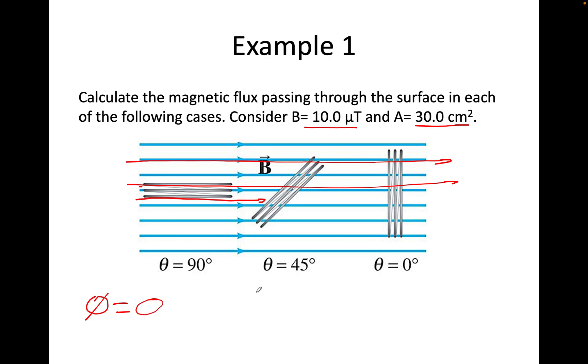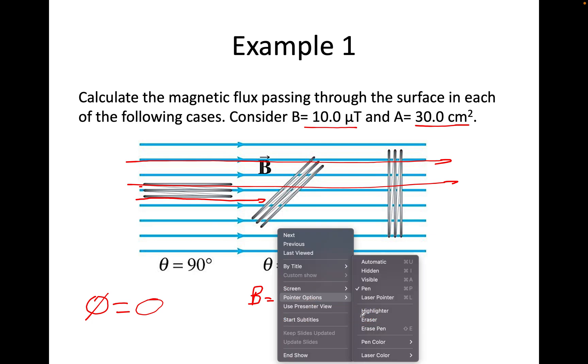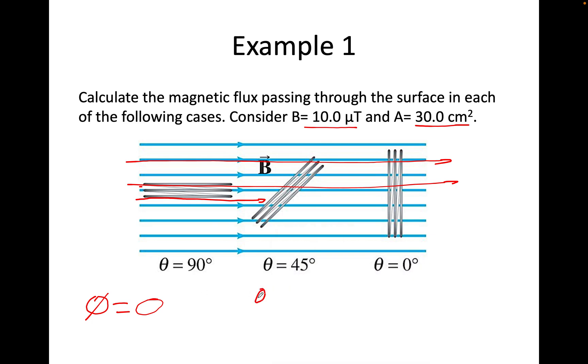This will be flux equals BA cos 45. So 10 times 10 to the minus 6. This means times 10 to the minus 6. And then area is 30 centimeters squared. So that will be times 10 to the minus 2 squared, which is times 10 to the minus 4. Keep that in mind, if it's in centimeters squared. And that is what you'll put into the formula for this one. And also this one. This will be BA cos 90. I want you to try and solve it yourself. We have done this in class, but there's direct substitution.